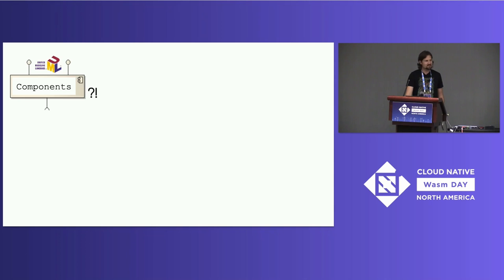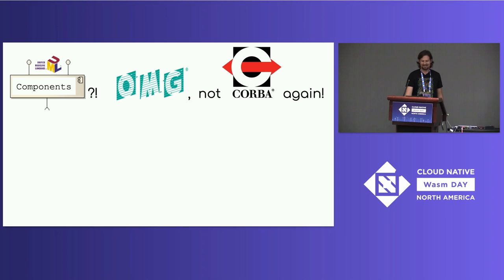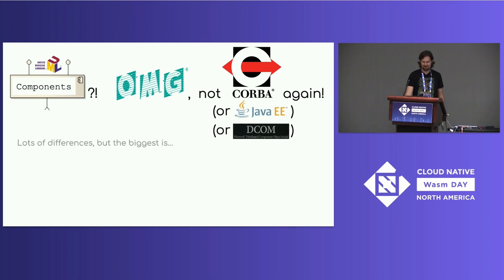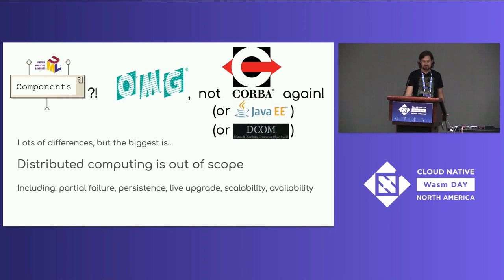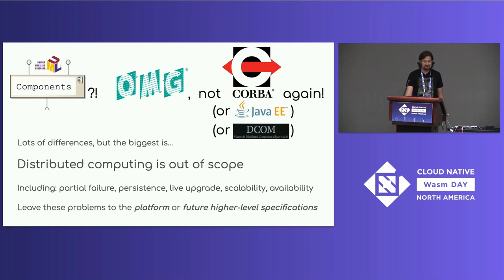If you've been around the block a few times, you might be saying: components — not CORBA again, or Java EE, or MSCOM. And there are a lot of differences, but the big one I'd like to point out is that distributed computing is out of scope for the component model. This means partial failure, persistence, live upgrade, scalability, and availability. These are definitely important problems, but they're not something we can automagically solve in the component model. Instead, we're leaving these up to a higher layer, like the platform embedding and future higher-level specifications.